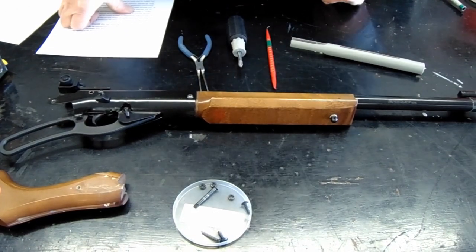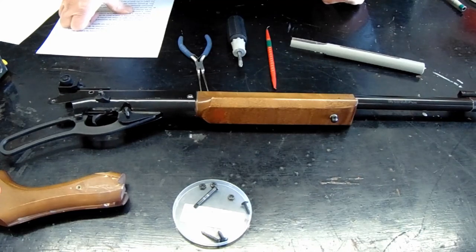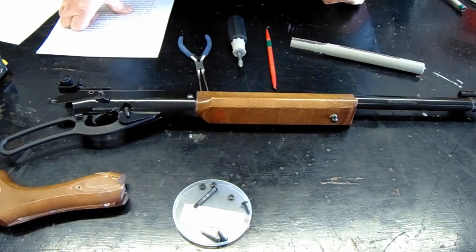Okay, we're here at the SureShot range today talking about the Daisy 499B Target BB gun.